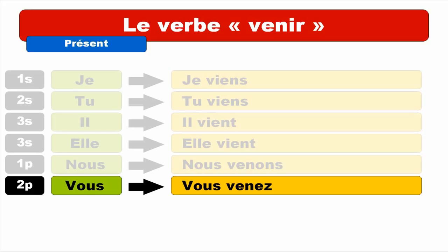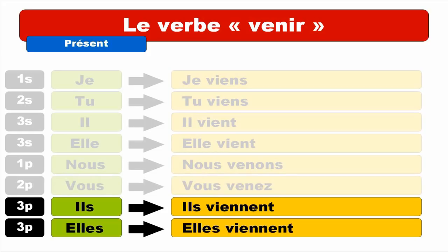And then let's finish with the third person of the plural — masculine ILS. You get ILS VIENNENT. Repeat. ILS VIENNENT. If you notice, the first E is pronounced like E because you've got a double N after it — VIE, VIE, VIENNENT. The final ENT is not pronounced. ILS VIENNENT. Repeat. And same thing for ELLES — ELLES VIENNENT. Repeat. ELLES VIENNENT.